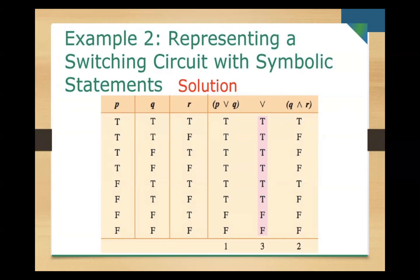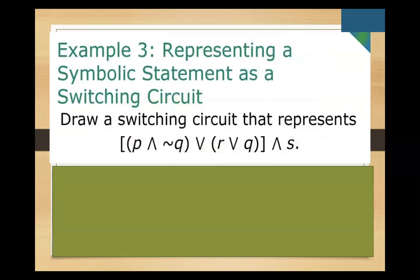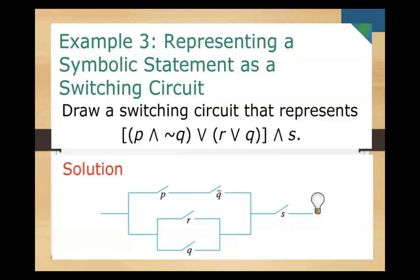Another example: draw a switching circuit representing the expression (p AND NOT q) OR (r AND q AND s). Since p AND NOT q uses AND, that is a series connection. Then r OR q is a parallel connection, and s is in series with that. So the symbolic form is: quantity (p AND NOT q) OR quantity (r AND q AND s).